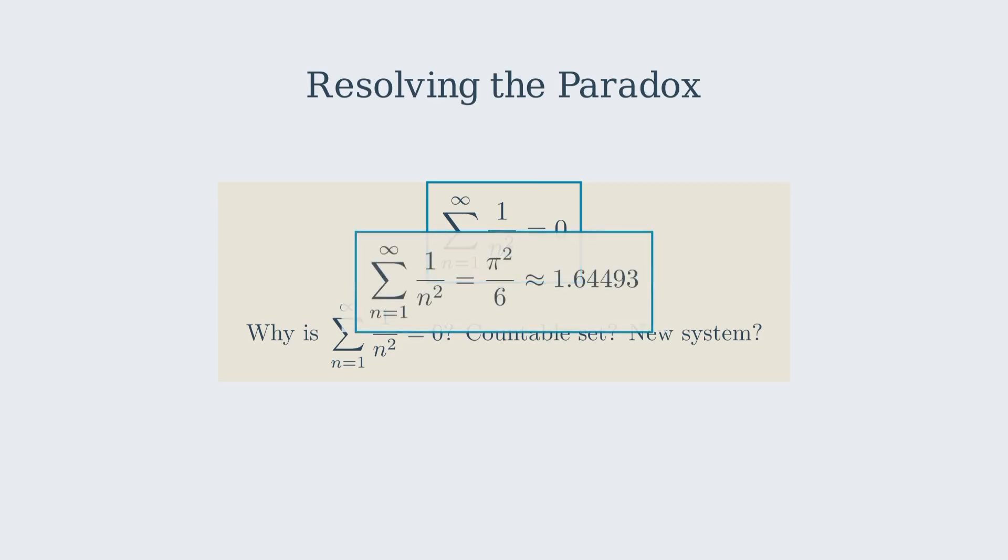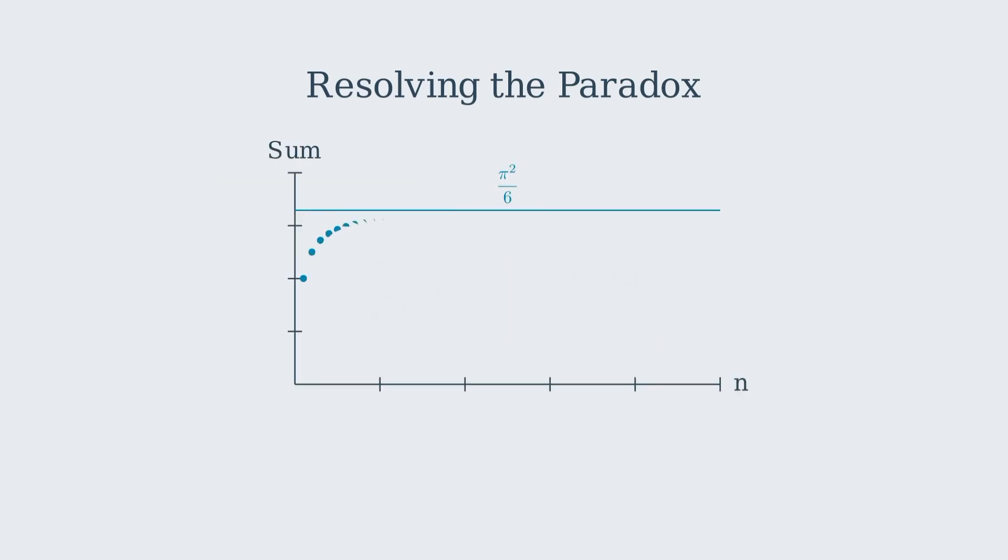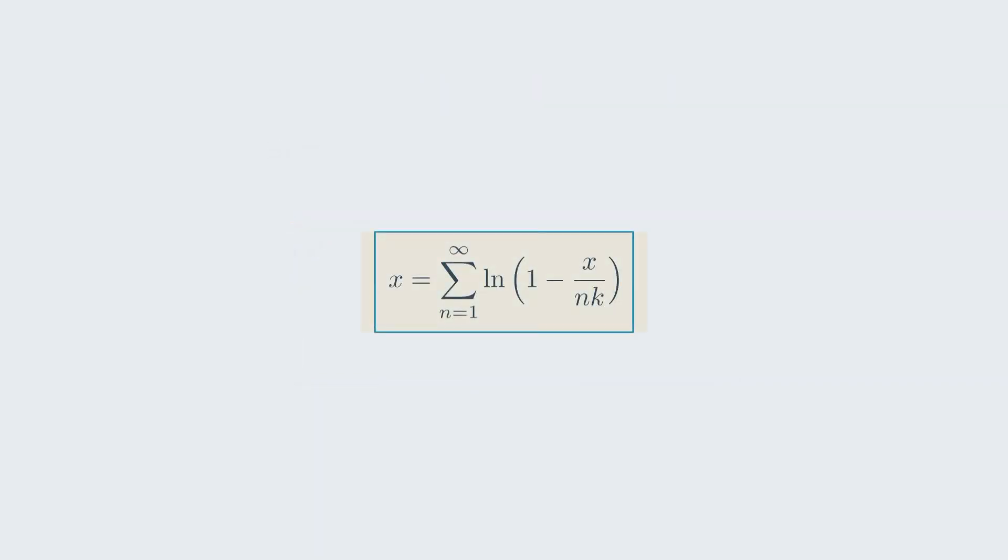because in standard math, this sum is pi squared over 6. Let's double check by taking the log of our product. x equals the sum from n equals 1 to infinity of the natural log of 1 minus x over nk.